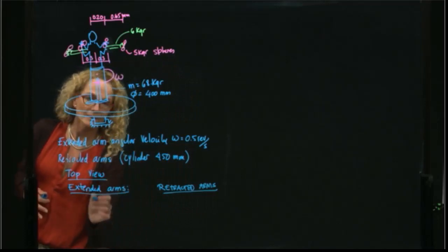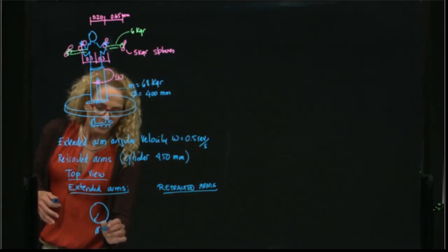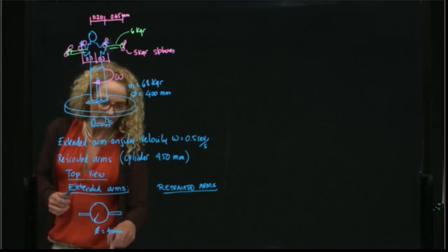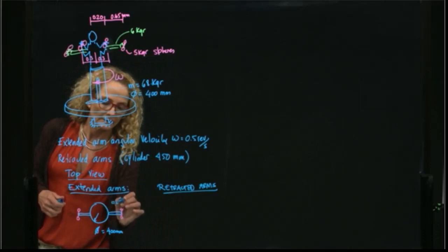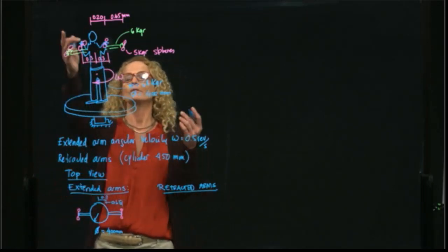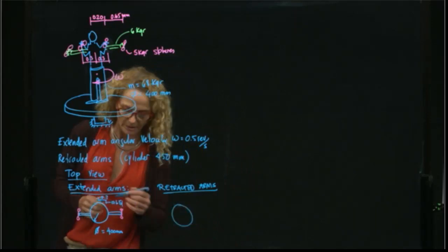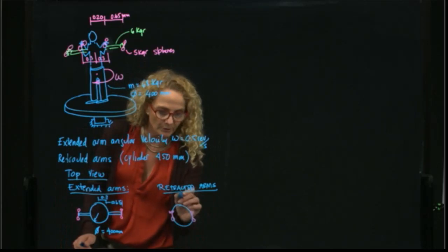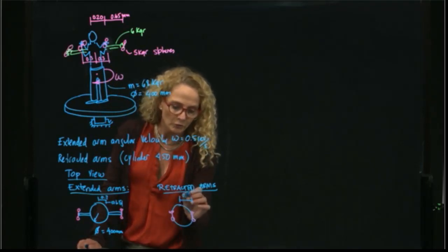When the arms are extended, the person is considered to be a cylinder of diameter 40 millimeters, and then the arms extend outward with the dumbbells at the end. The arms are 0.65 meters long, and the radius of the body cylinder is 0.2 meters. When retracted, we have only one cylinder, and the dumbbells are held close to the body.